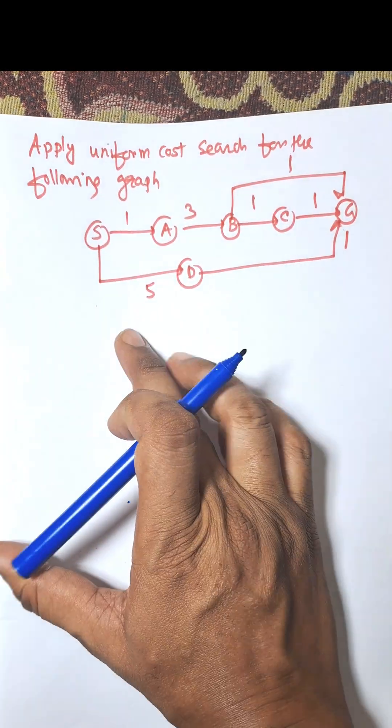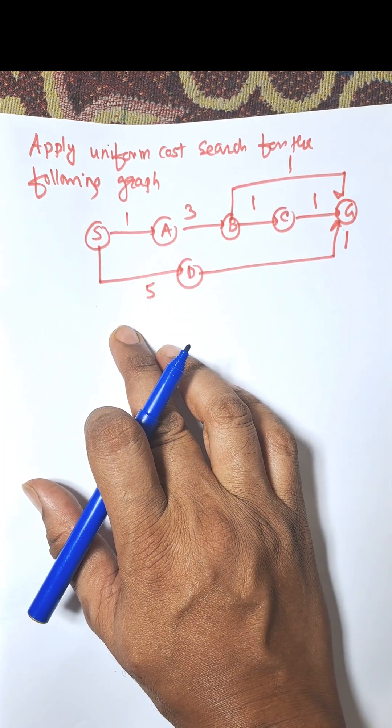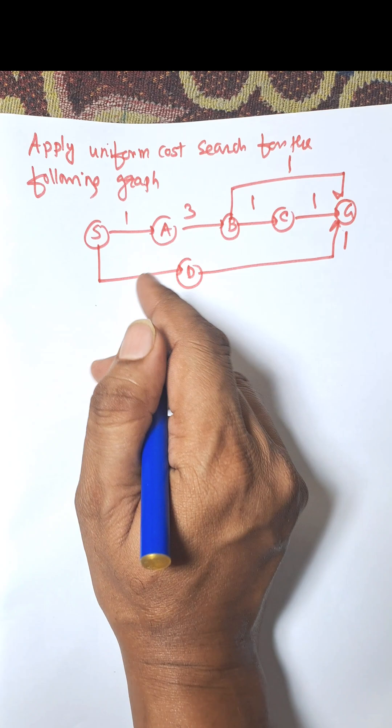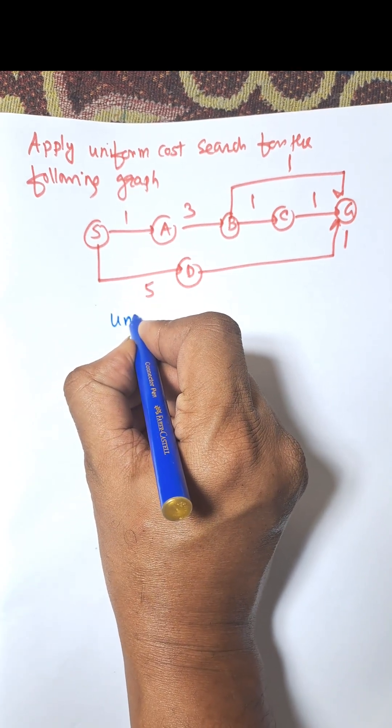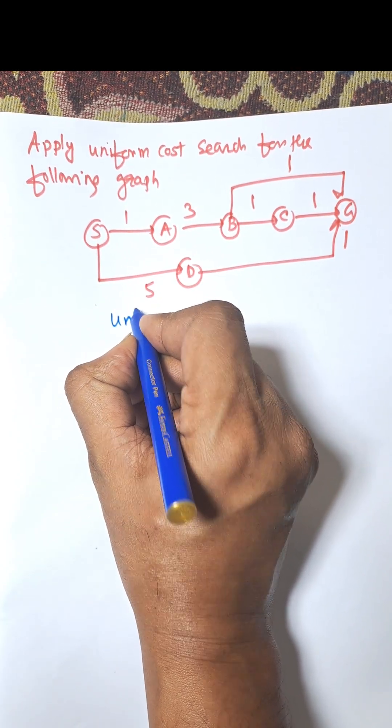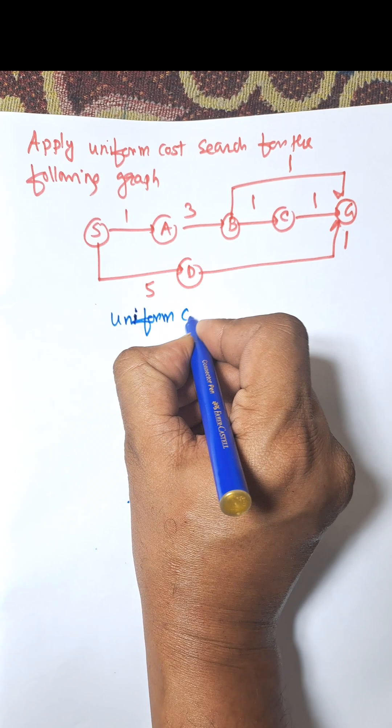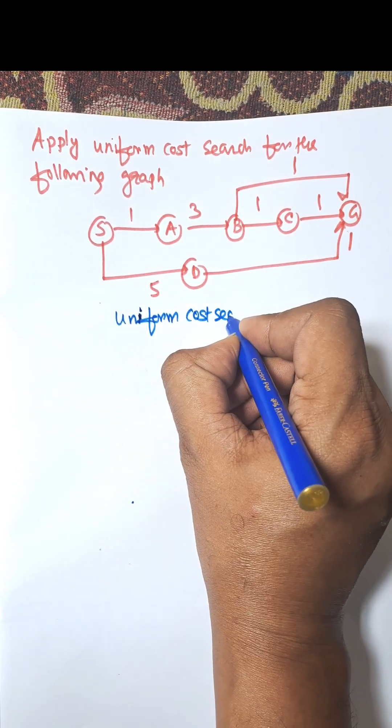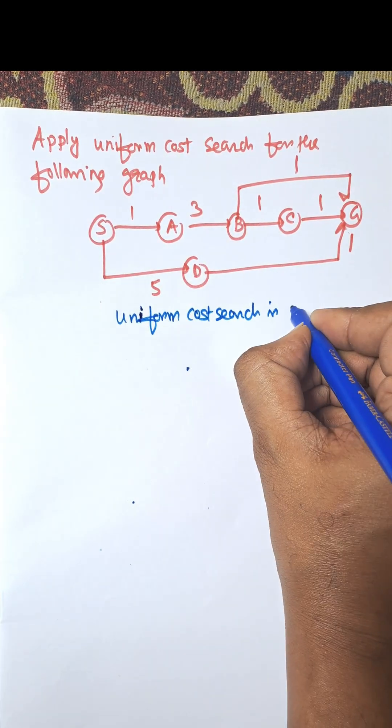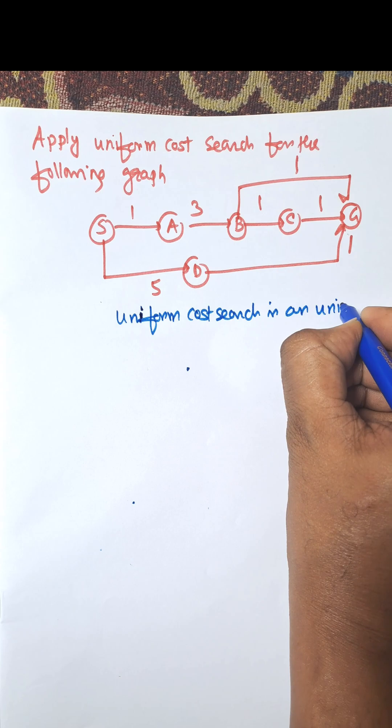Hi everybody, in this video I am going to solve uniform cost search for the following graph. Uniform cost search is an uninformed search.